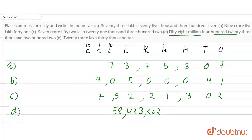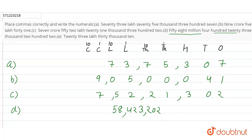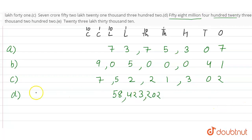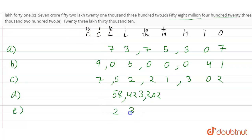Now Part E: it is asking for 23 lakhs, 30,000, and 10. So this can be written like this, and we insert the commas like this.